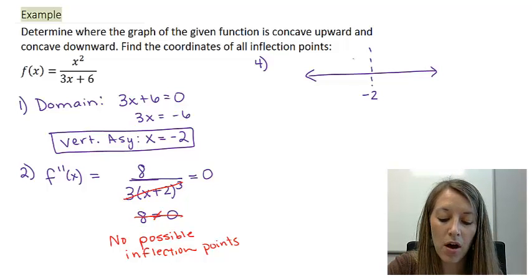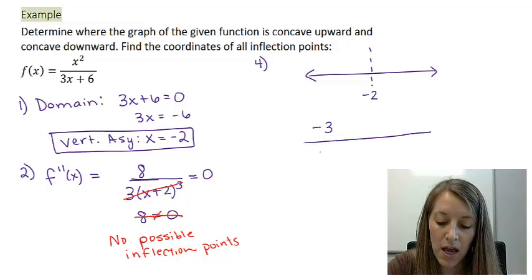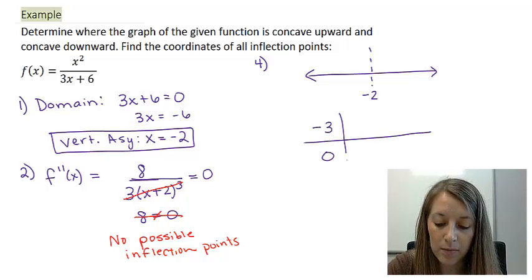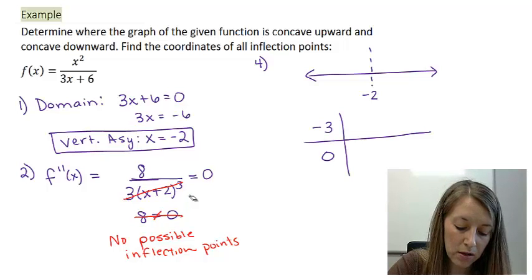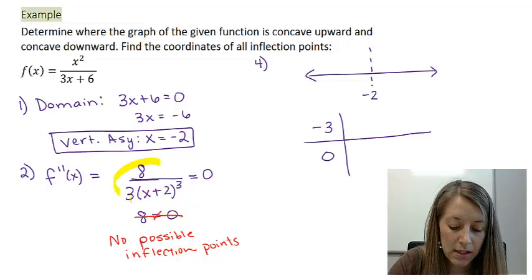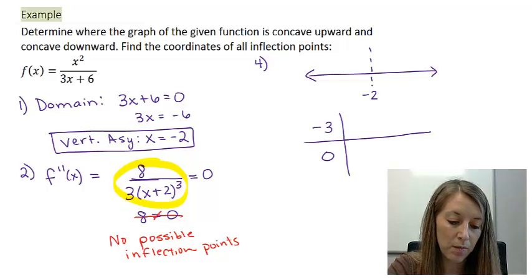I have a vertical asymptote at negative two on this number line. I need to test my concavity to the left of negative two and to the right of negative two. I'm going to do that by using test points of negative three for the left and zero for the right. I want to test this in the most factored form of my derivative, and this is my most simplified, which is also my most factored form.